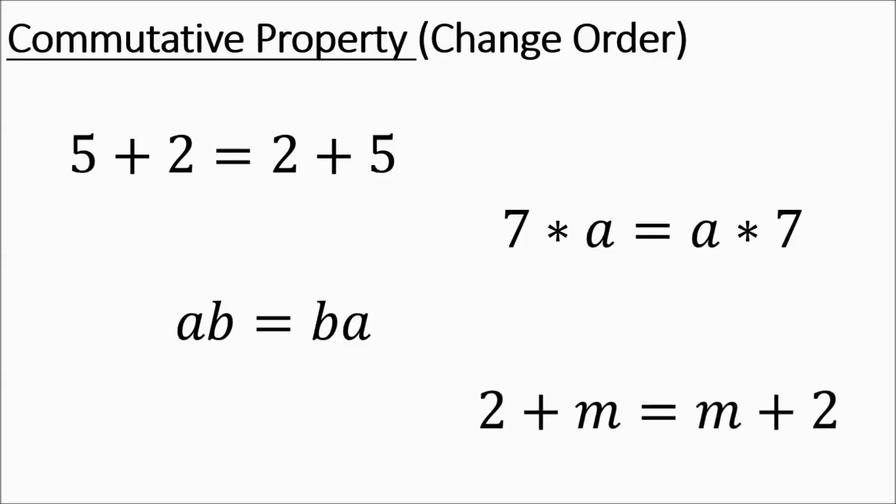First, we're going to talk about the commutative property, changing order. Here are some quick examples. Five plus two equals two plus five. They both work out to seven. Seven times A, A times seven. You're going to get the same thing either way. If you have A times B, it's going to equal B times A. Two variables next to each other means you're multiplying them. And finally, two plus M is the same thing as M plus two. That's commutative property.